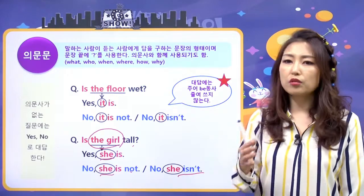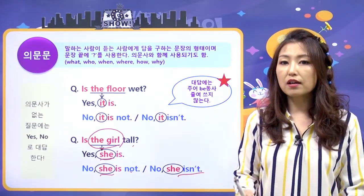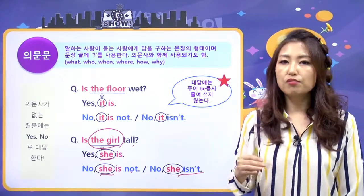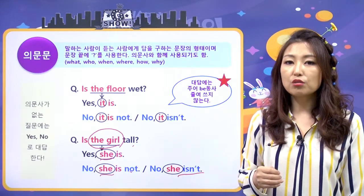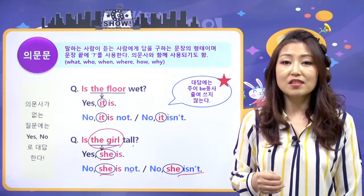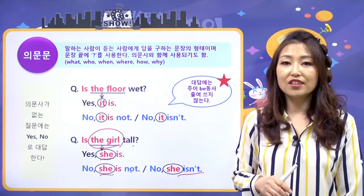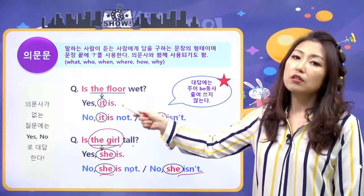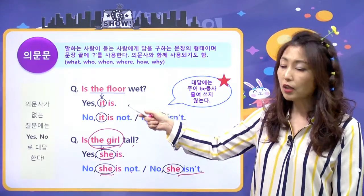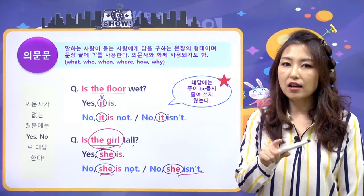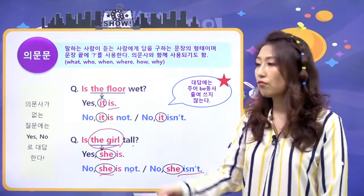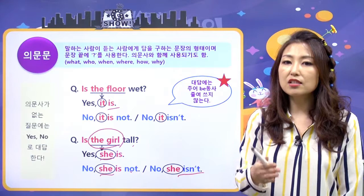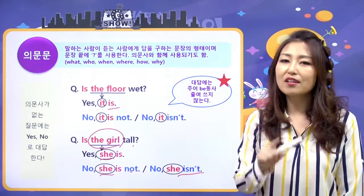대명사로 대답하면 바로 앞에서 얘기했던 거를 지칭하는 거기 때문에 사람들이 무리 없이 알아들을 수 있어요. 우리도 '그 책 재밌어?'라고 하면 '응, 그 책 재밌어'라고 하지 않고 '응, 재밌어'라고 하잖아요. 그거랑 비슷해요. 꼭 대명사가 질문에 있지 않아도 대답은 대명사로 받아서 해요. 단수이면 단수, 복수이면 복수를 맞춰주면 돼요.